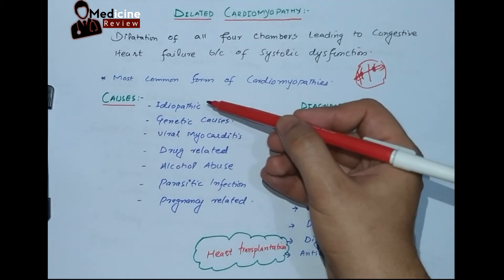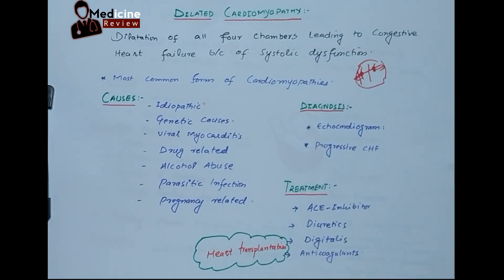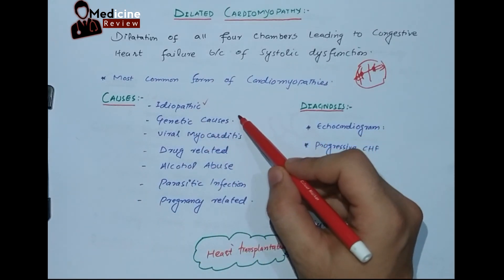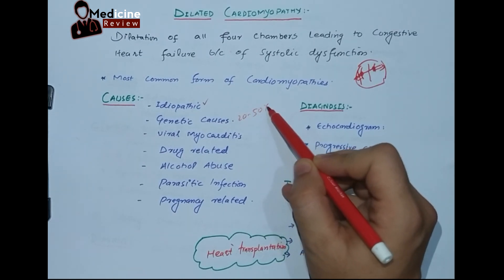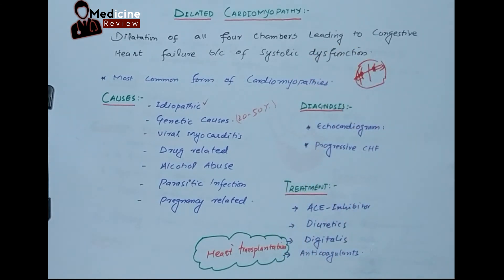Looking at the causes, most of the causes are idiopathic — we don't know the reason. But genetic causes are very important: up to 20 to 50 percent of dilated cardiomyopathies are hereditary, and more than 40 known genes have been found to be mutant, which are responsible for the production of the cytoskeleton of the myocardium. If there is a mutation in these genes, there will be abnormal production of the cytoskeleton.